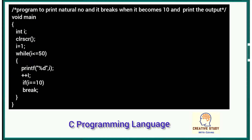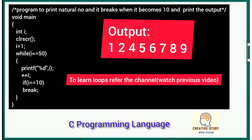Now let's understand it with an example. This is a program for printing natural numbers, but when the value becomes 10 it will break the loop and print the output. We give the condition: if i equals 10, break the loop. So it will print from 1 to 9 only.